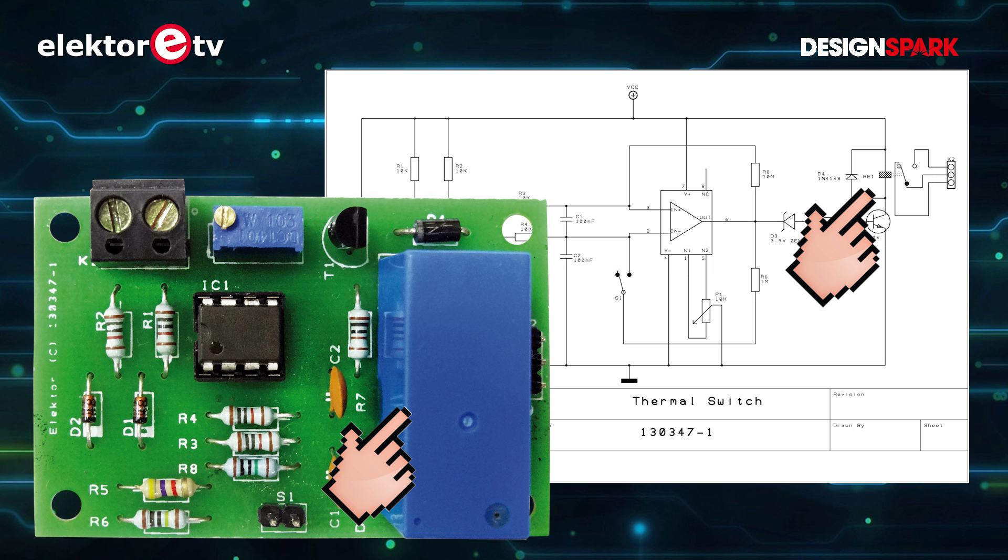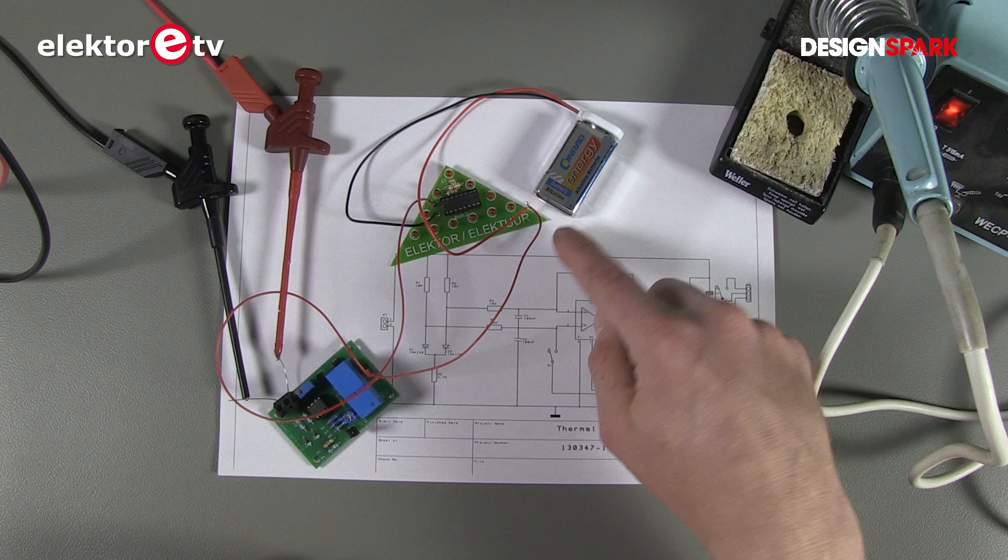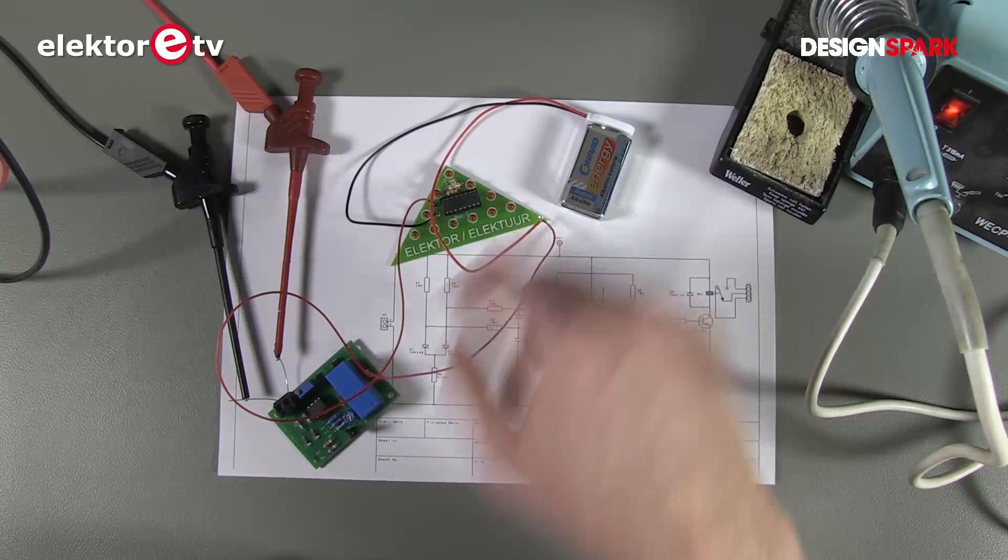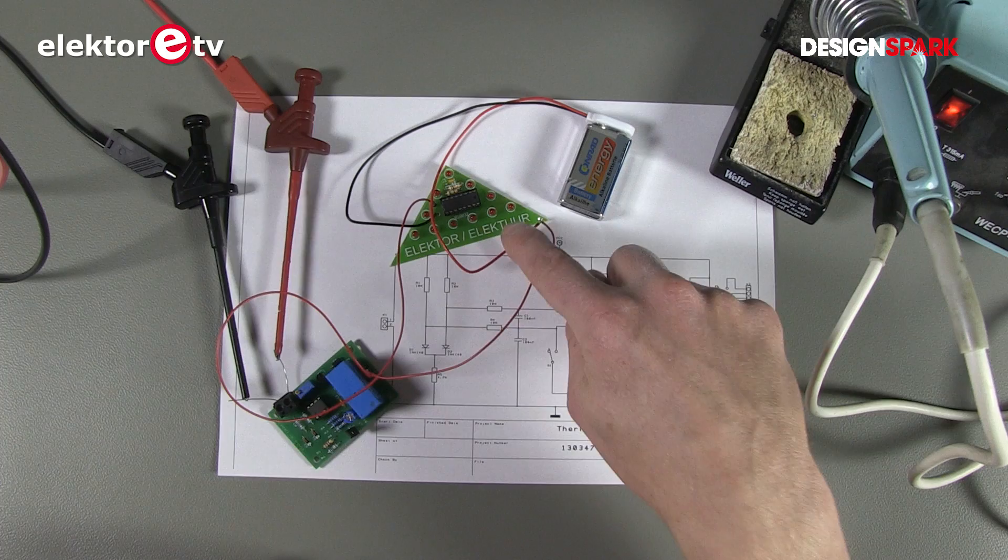So here we have on the board a relay with a big blue block that controls this little PCB, which is our display battery powered. So it's a dry contact switching the power to the little PCB.